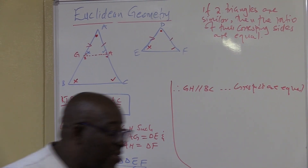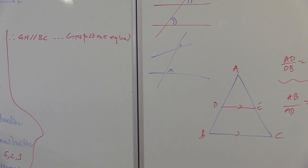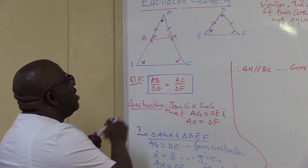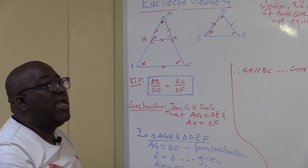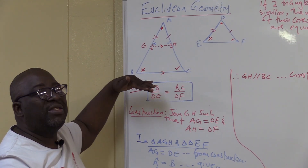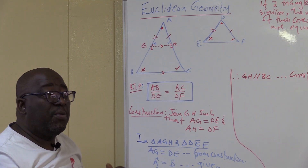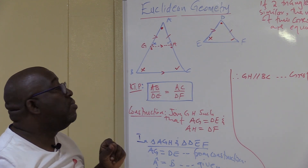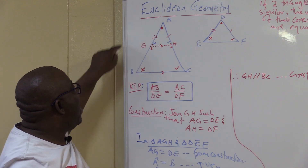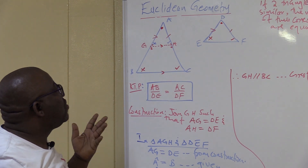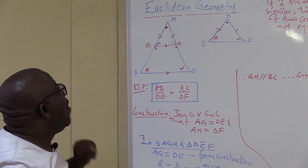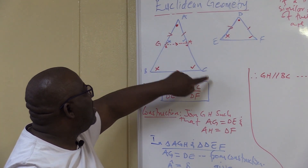Now we've got a line GH drawn parallel to one side of triangle ABC. Once we show that corresponding angles are equal, this line is parallel to BC. Now, what do we know about a line drawn parallel to one side of a triangle? It divides the other two sides proportionally — that is the proportionality theorem. Once GH is parallel to BC, we've got two options. We can say AG over GB equals AH over HC, or we can say AB over AG equals AC over AH.